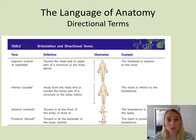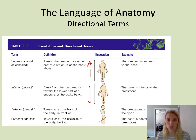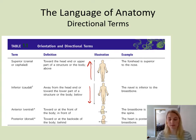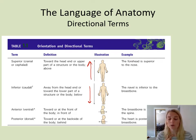Most of these directional terms come in partners or opposite pairs. Superior means towards the top; inferior means towards the bottom — above or below. For example, the forehead is superior to the nose. The navel, the belly button, is inferior to your breastplate. Your chin is inferior to your nose or your forehead, and your neck is inferior to your head.